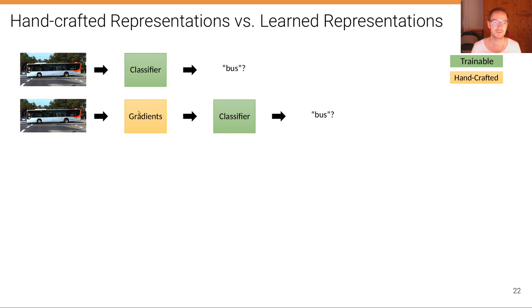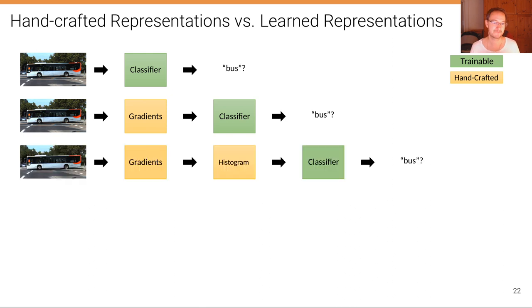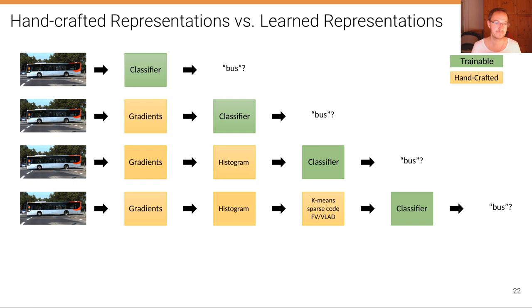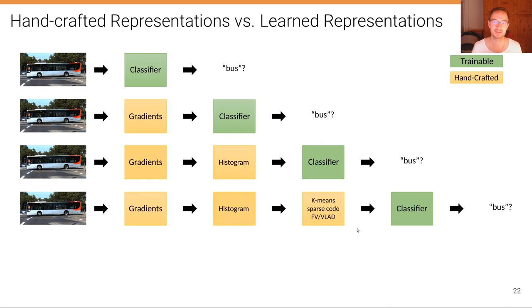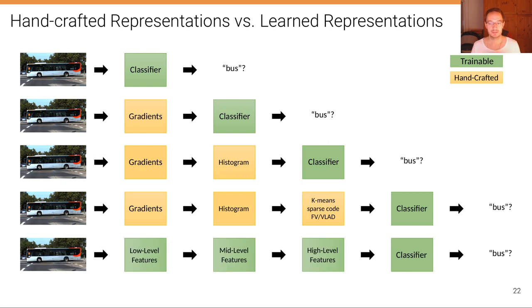Now we have hand-crafted features in yellow and the trained component in green. Even better is to take gradients, form histograms, and pass this hand-engineered representation through a learned classifier — or do something on top like k-means, sparse coding, or a representation called VLAD. But all of these approaches suffer from the problem that these intermediate representations have been hand-engineered without any focus on optimality. The difference in deep learning is that we try to learn all those features.